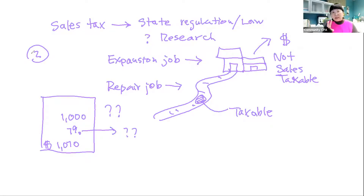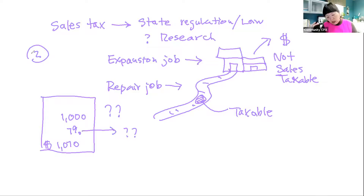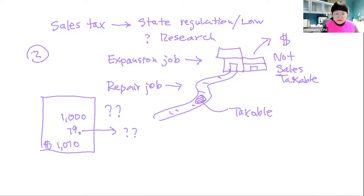For small businesses, sales tax is important — think about not paying money you shouldn't be paying. And if you've already overpaid sales tax, no problem: you can go back and amend your sales tax return to get that money back. The state government understands mistakes happen and that small businesses easily overpay. Now let's go on to property tax.